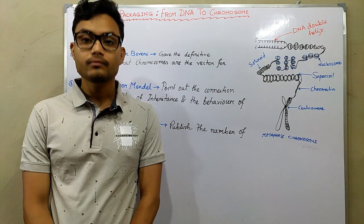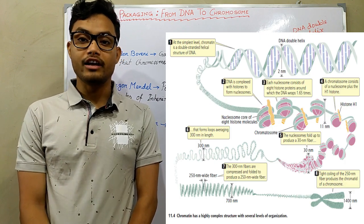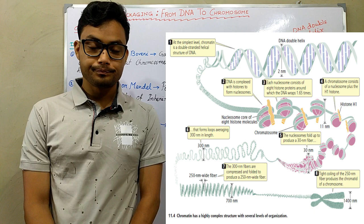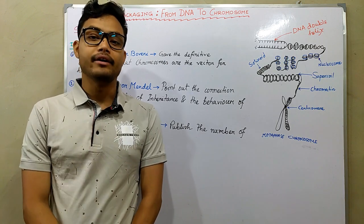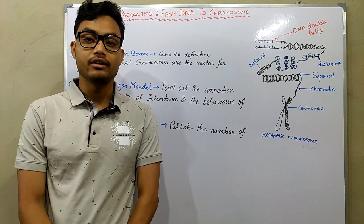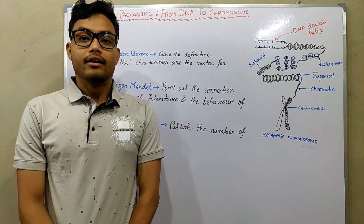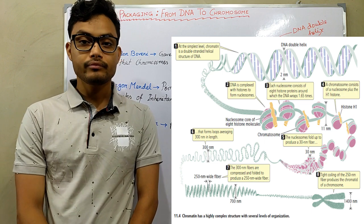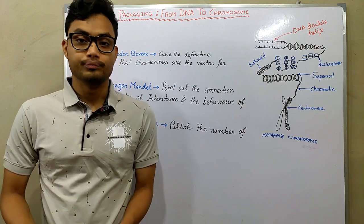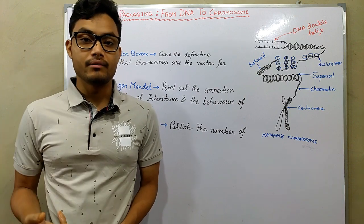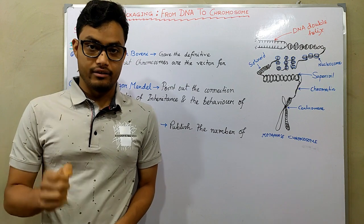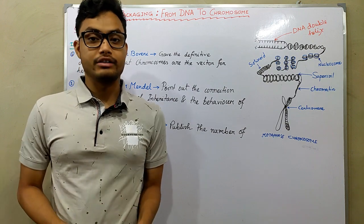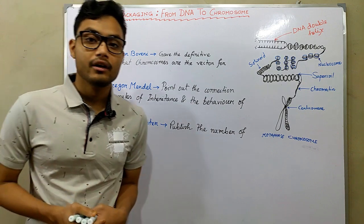Our DNA length is 1.8 meters, but our DNA is compacted into 90 angstroms of space. So from 1.8 meters to 90 angstroms, it is a very difficult job for a cell to compact its DNA. In this video, I am going to discuss DNA packaging — that means from DNA to chromosome — how DNA packages itself into a small, tiny area.